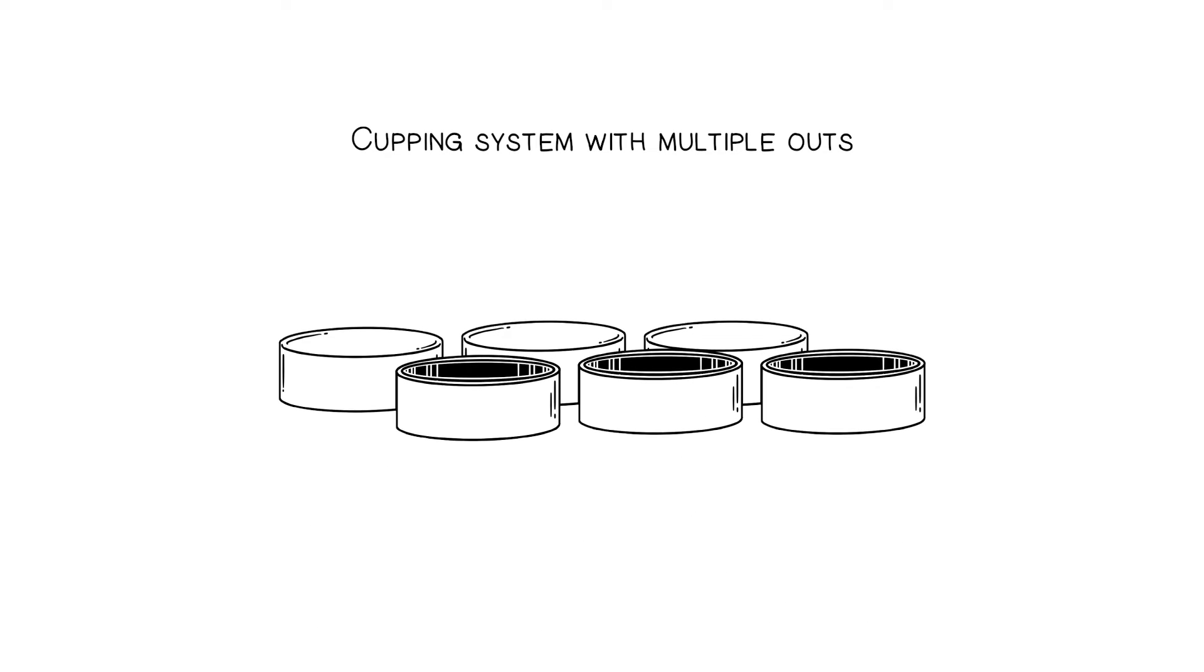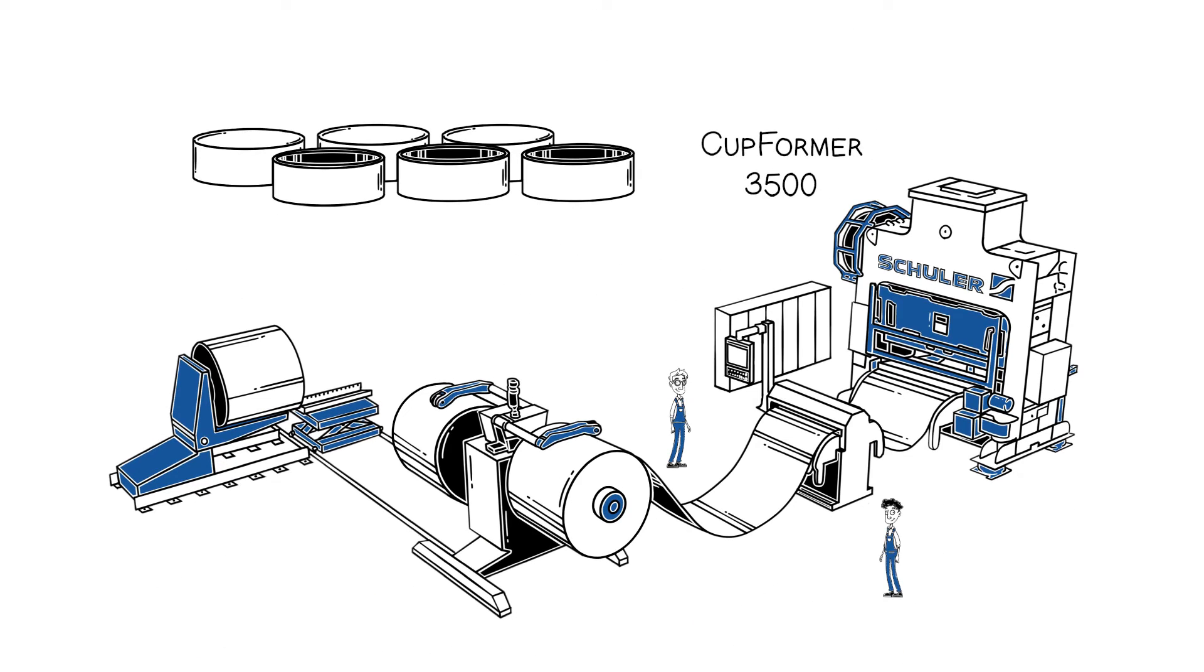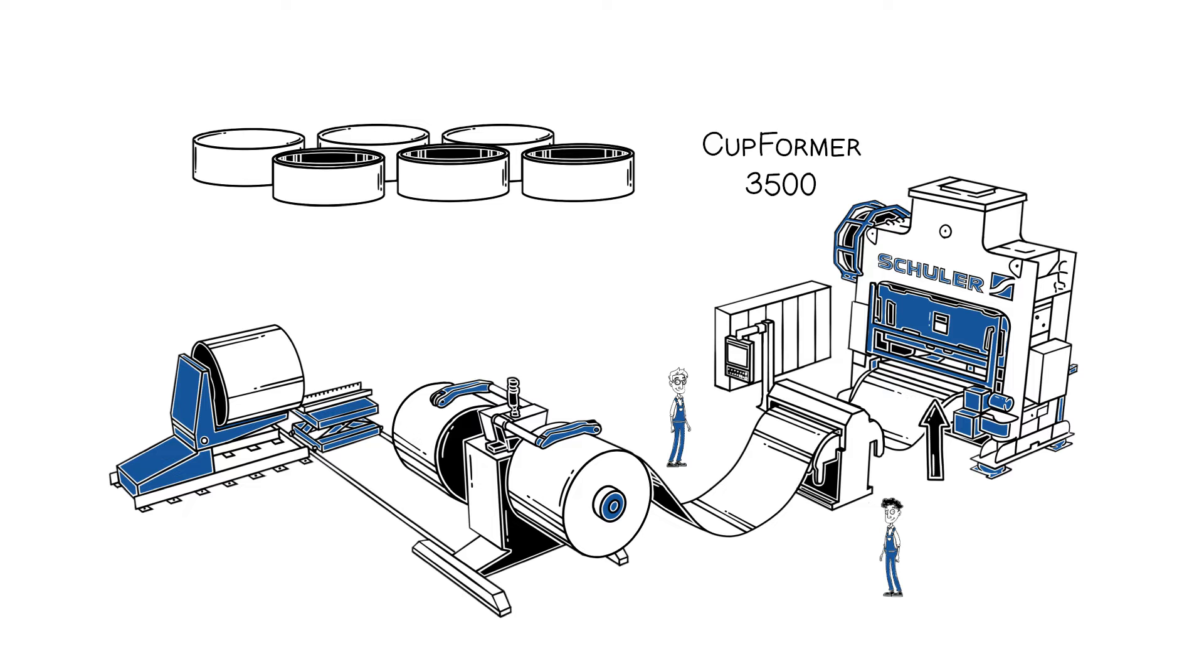The cupping system works for the multiple forming of cups and consists of a coil line, a servo roll feed, a cupping press, and a cupping die set.